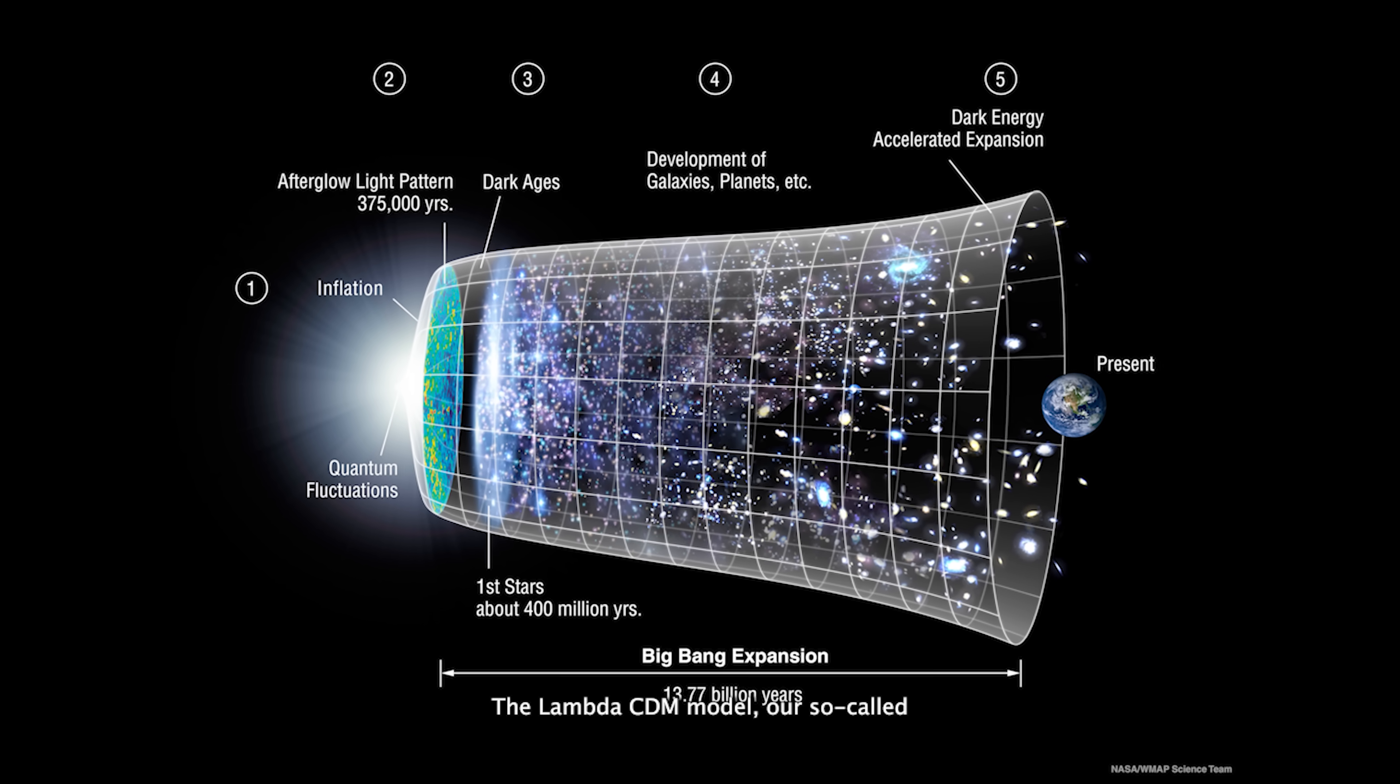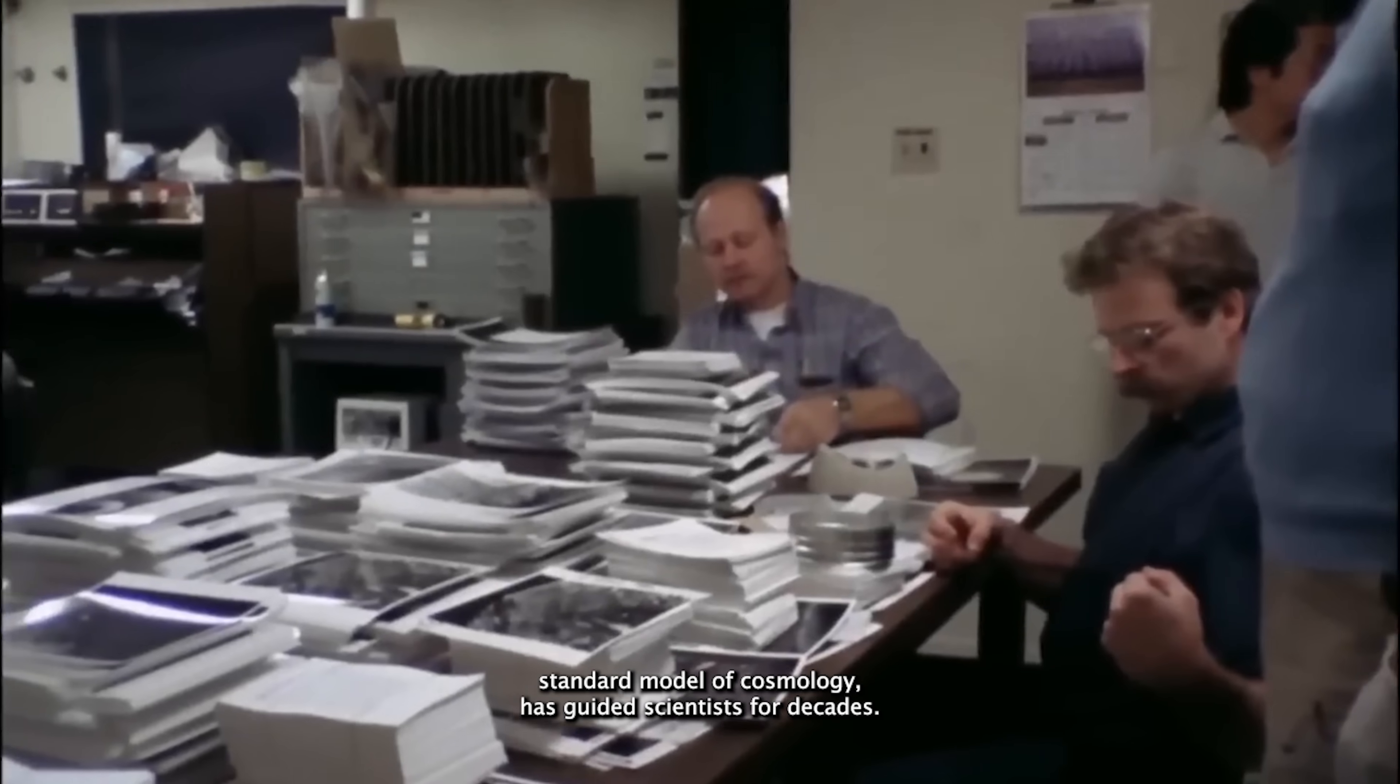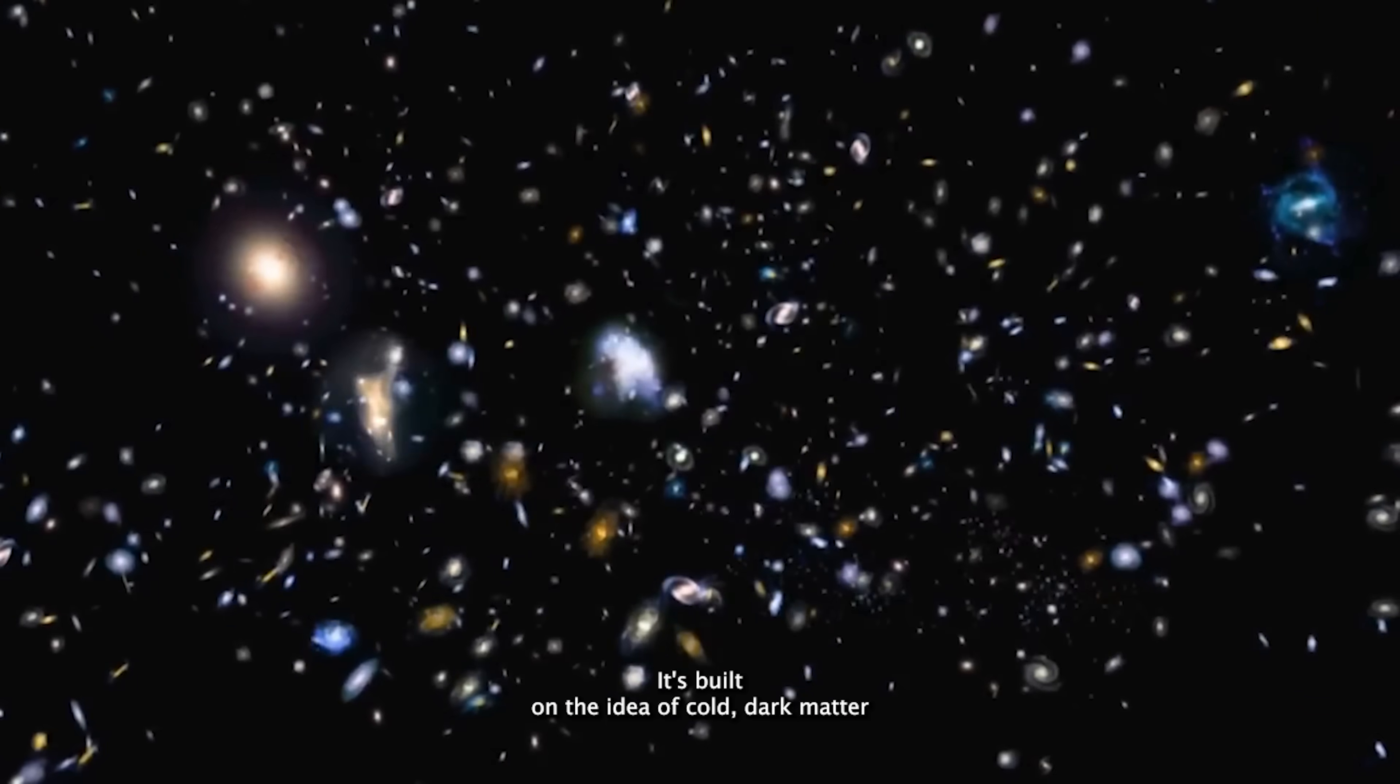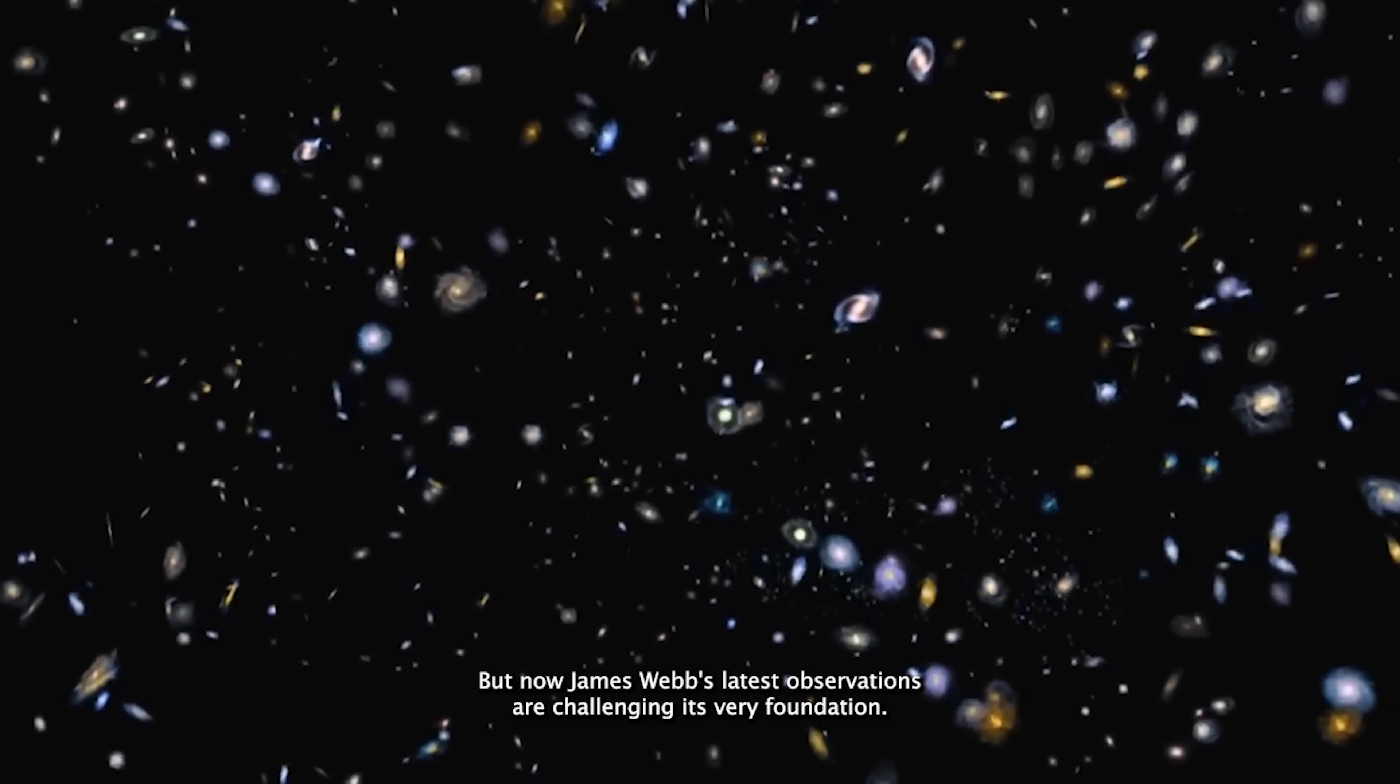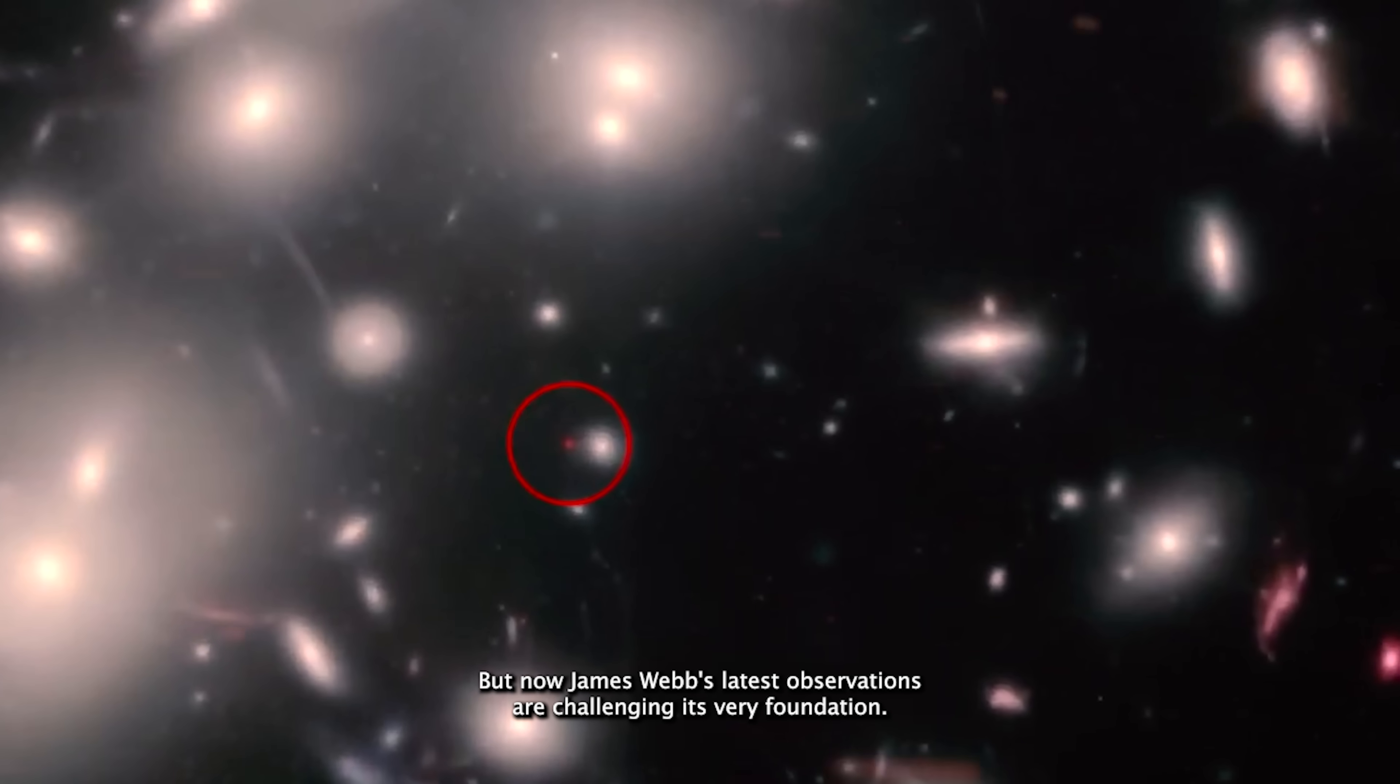The Lambda CDM model, our so-called standard model of cosmology, has guided scientists for decades. It's built on the idea of cold dark matter and a mysterious force called dark energy. But now, James Webb's latest observations are challenging its very foundation.